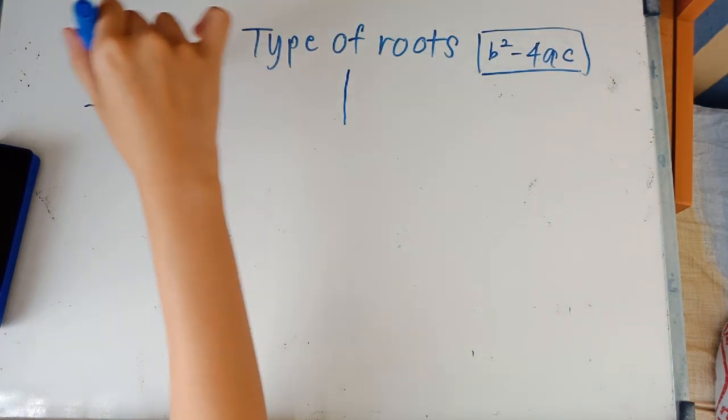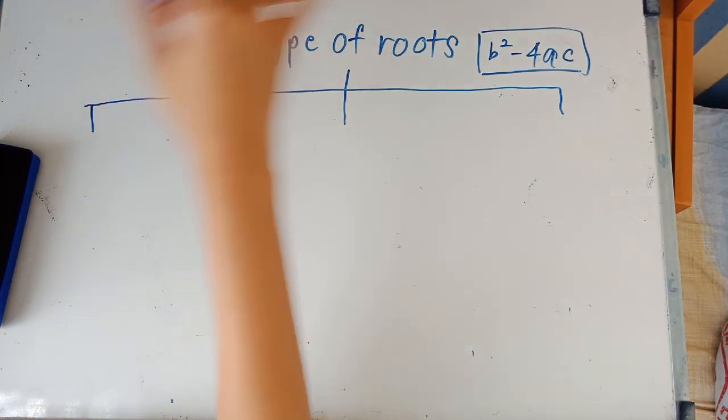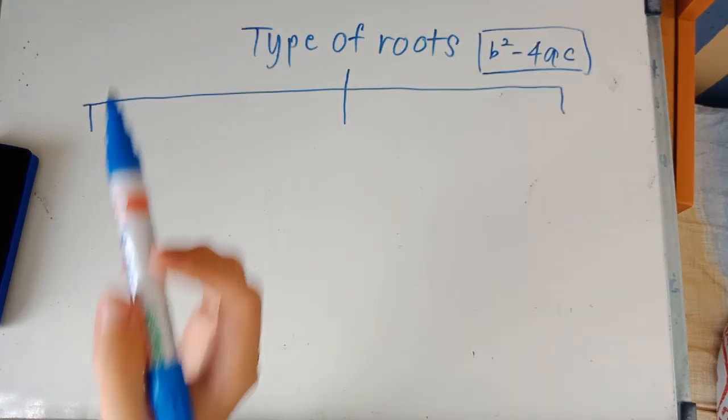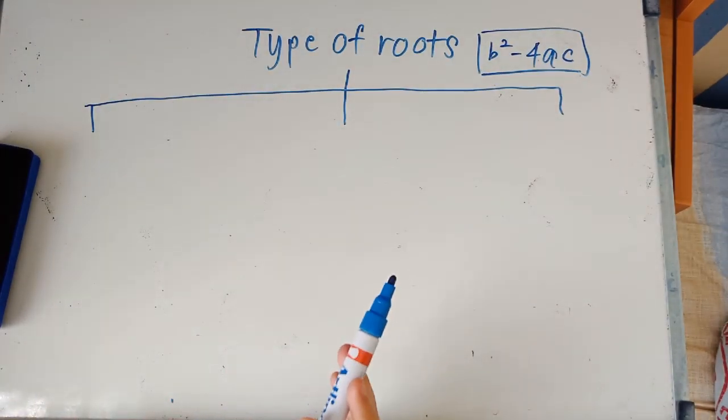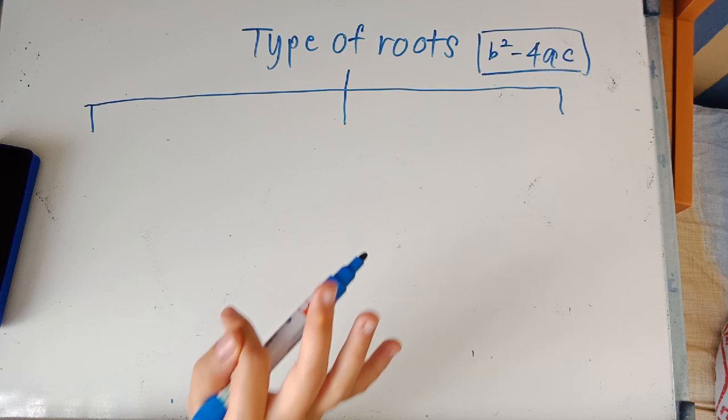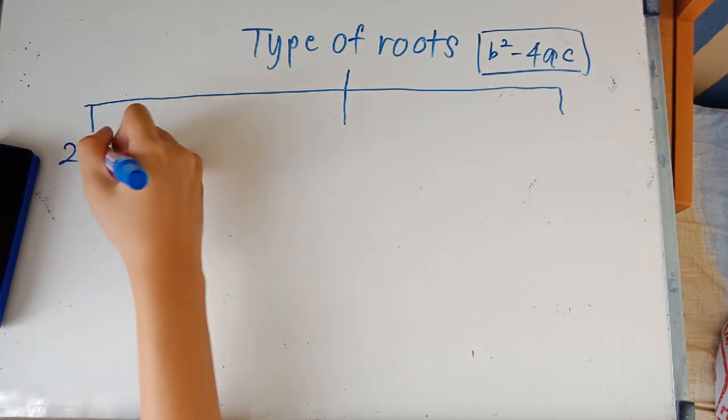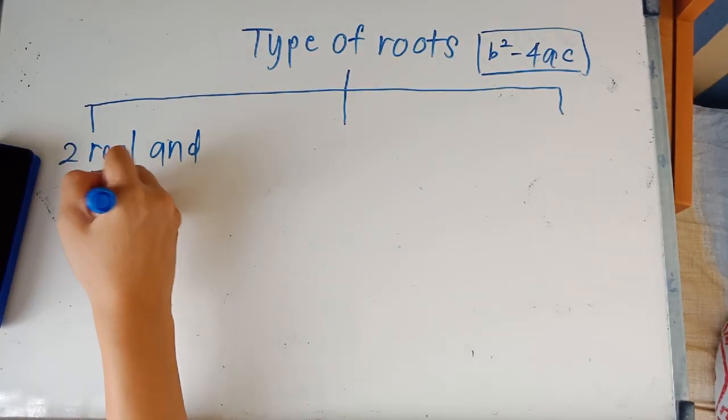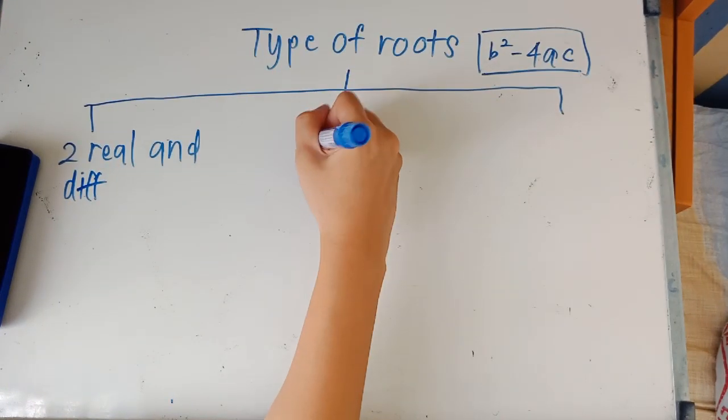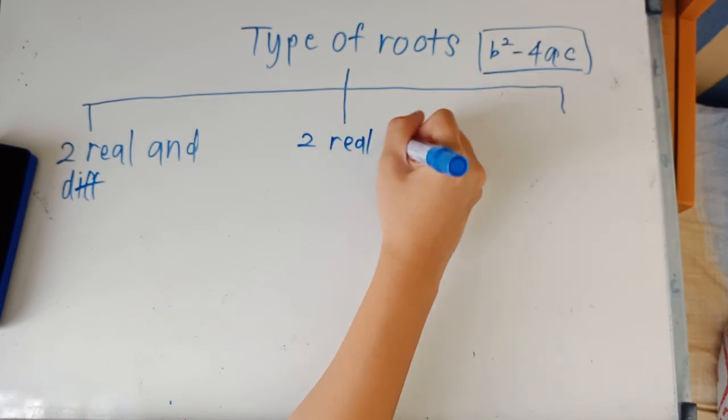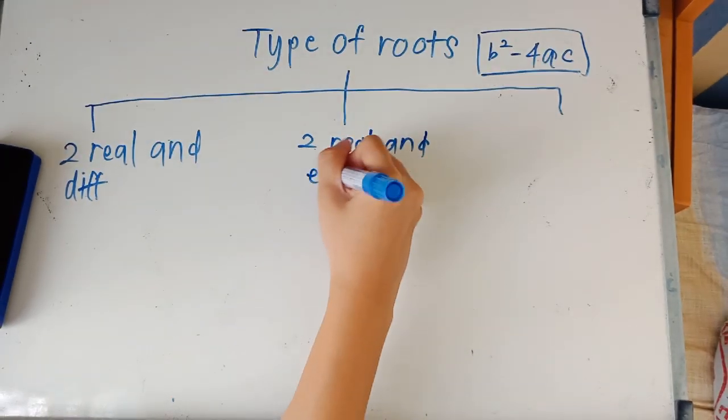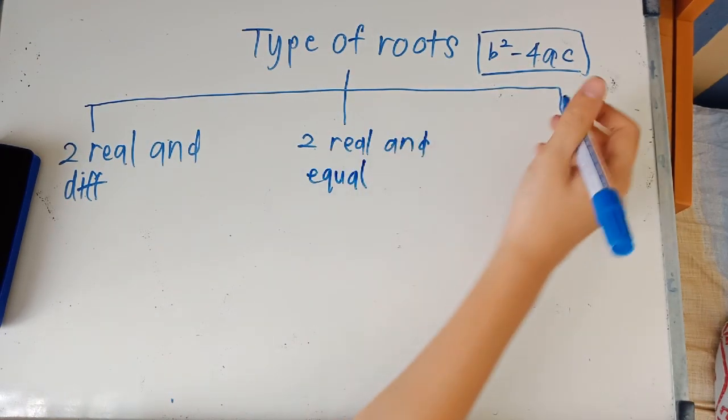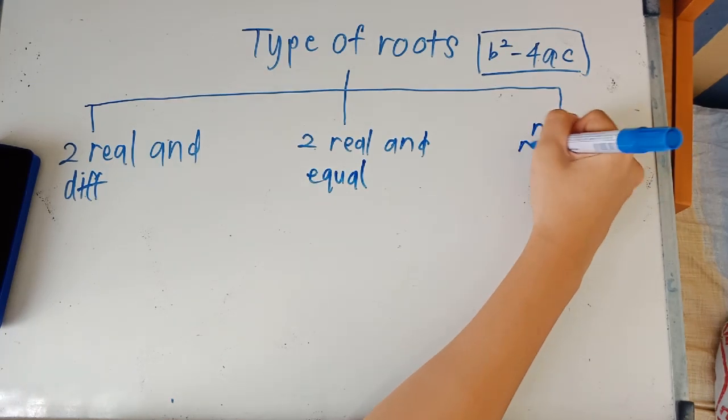Alright, so from here we're going to do sort of a root diagram. And we have different kinds of roots. We only have three types of roots actually. And the first one would be two real and different roots. The second type would be two real and equal roots. And the third type would be no roots at all.